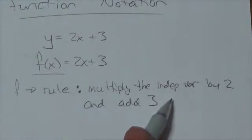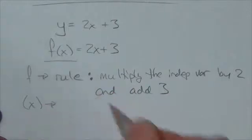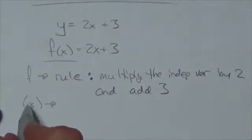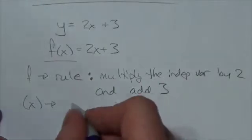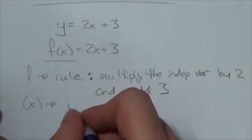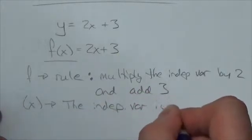Multiply the independent variable by 2 and add 3. So then what is this part? Well, this part right here, the parentheses, x parentheses, this is identifying, this is telling us, the independent variable is x.